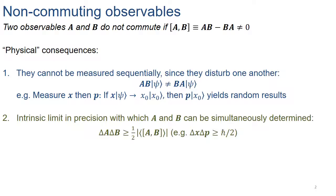Another consequence is that there's an intrinsic limit in how precisely these two properties A and B can be simultaneously defined. In the case of x and p, this is nothing but the Heisenberg uncertainty principle, but in general this limit is given by the Robertson inequality, and it depends on the value of the commutator between the two observables.